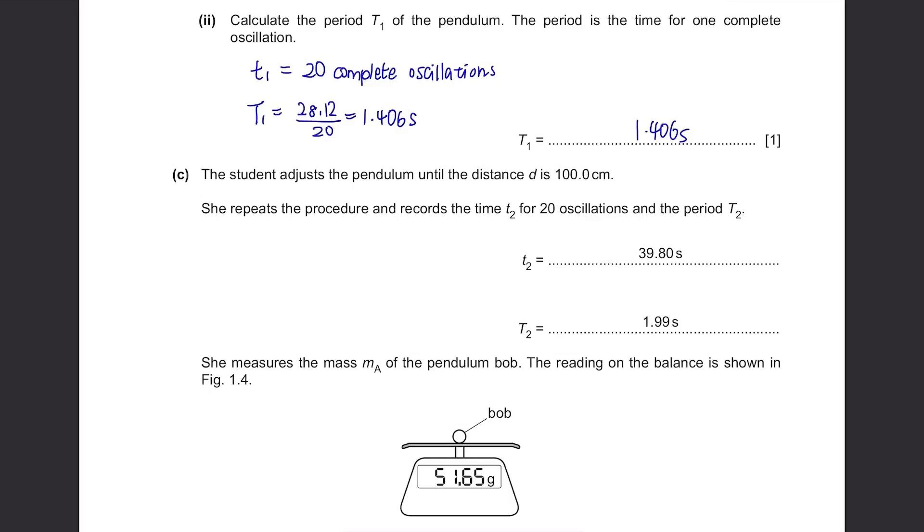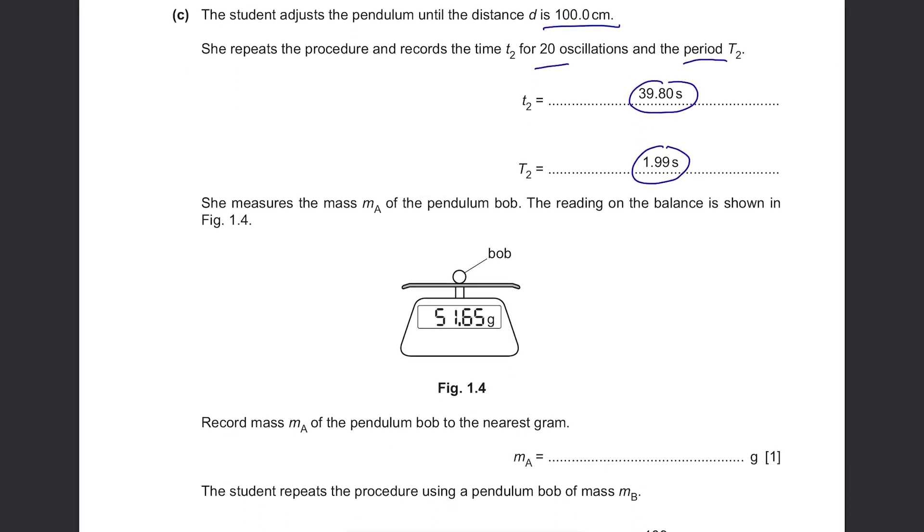Part C. The student adjusts the pendulum until the distance d is 100 cm. She repeats the procedure and records the time t2 for 20 oscillations and the period T2. This time it took longer. It's 39.80 seconds for 20 oscillations and 1.99 seconds for one oscillation. She measures the mass ma of the pendulum bob. The reading on the balance is shown in figure 1.4. Record mass ma of the pendulum bob to the nearest gram. The reading on the balance is 51.65 grams. So to the nearest gram, it's 52 grams.